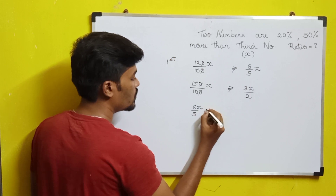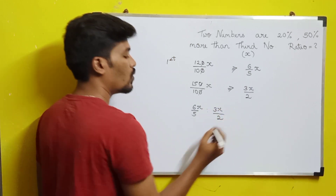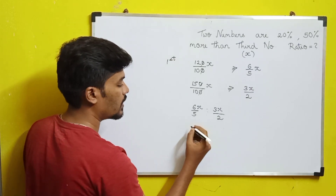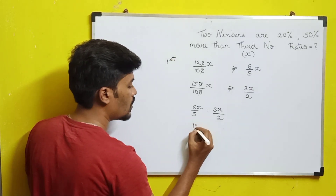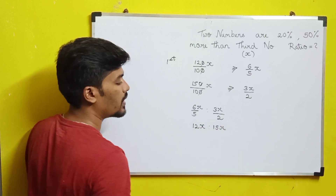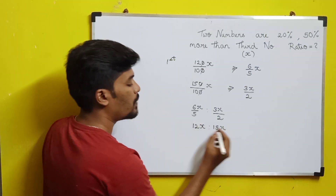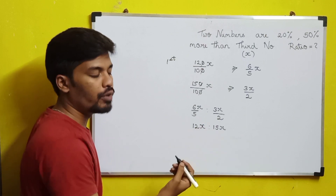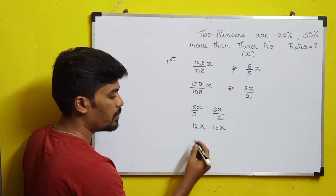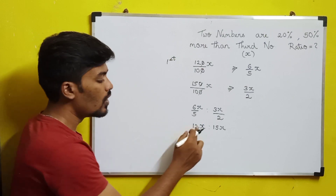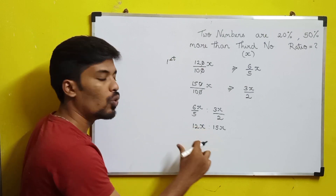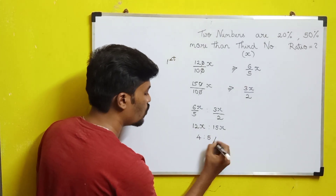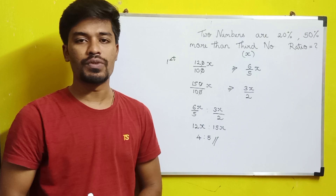Now we have the values: first number is 6X/5, second number is 3X/2. The ratio is (6X/5) divided by (3X/2), which simplifies to 12X divided by 15X. Cancelling X, we get 4 is to 5. So 4:5 is the answer for the first question.